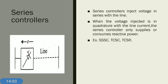The series controller is connected in series with the transmission line and injects voltage in series with the line. When the injected voltage is in quadrature with the line current, the series controller only supplies or consumes reactive power — similar to the shunt controller, which injects current in quadrature with voltage. Examples of series controllers are SSSC (Static Synchronous Series Compensator), TCSC (Thyristor Controlled Series Capacitor), and TCSR (Thyristor Controlled Series Reactor).